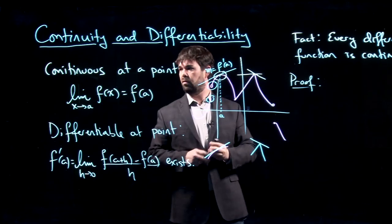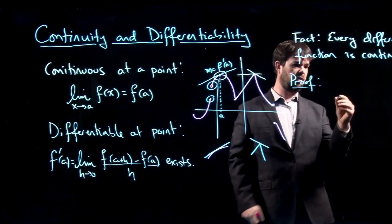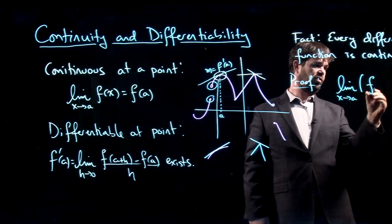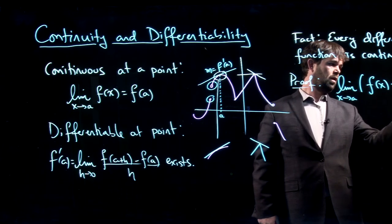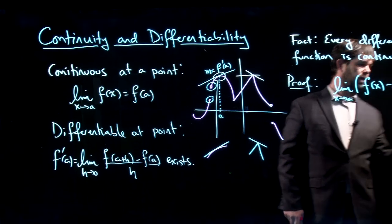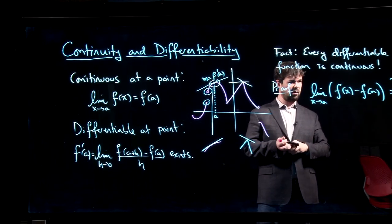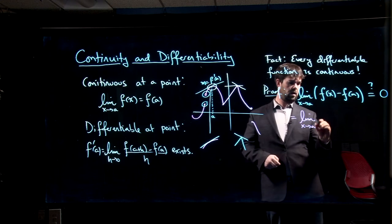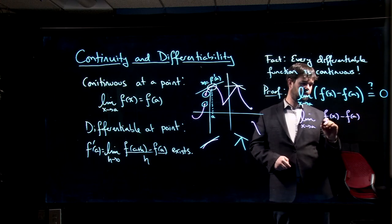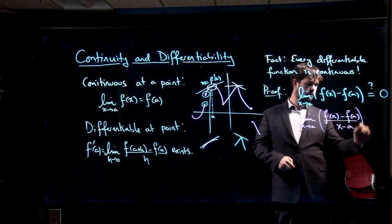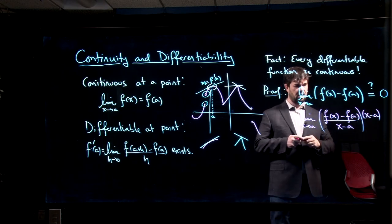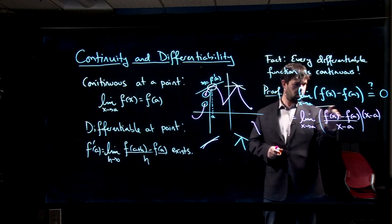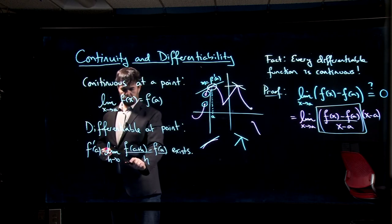One way I could rewrite this condition for continuity is I could say this would be the same thing as convincing you that the limit as x goes to a of f of x minus f of a equals zero. How can I convince you that this limit is zero? Well, this limit would be the same thing as if I take my f of x minus f of a, and I divide by x minus a, and then I multiply by x minus a.